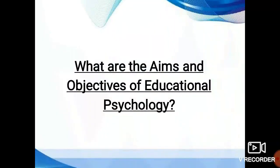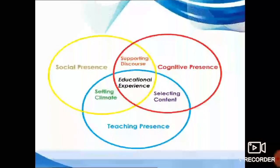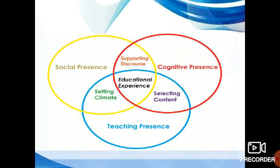What are the aims and objectives of educational psychology? This is a chart of aims and objectives. In this chart, we have cognitive presence, selecting content, setting climate, educational experience, teaching presence, and social presence.